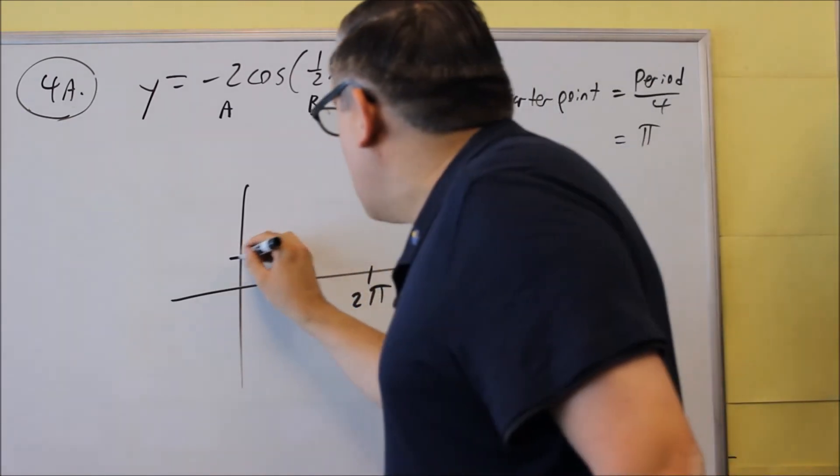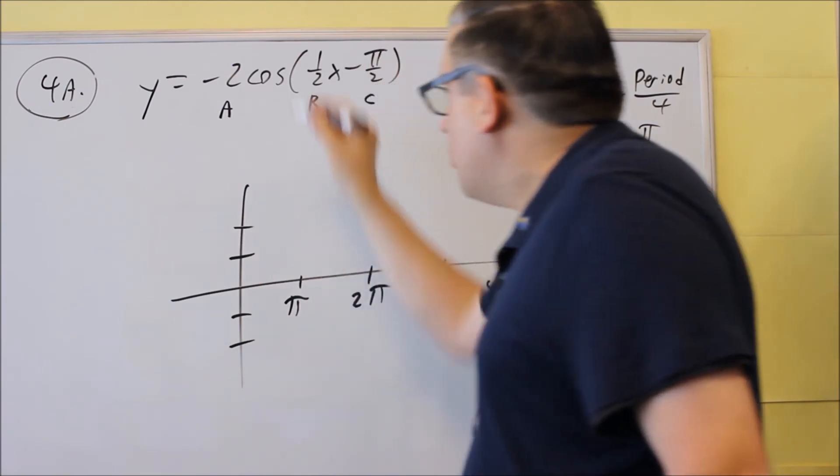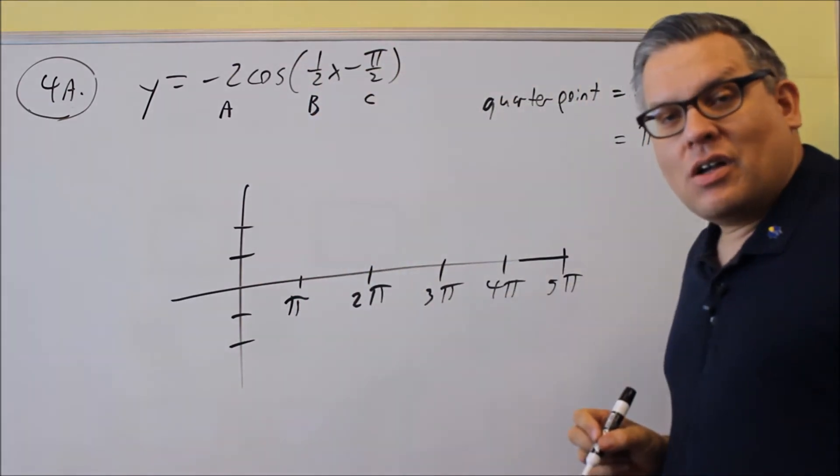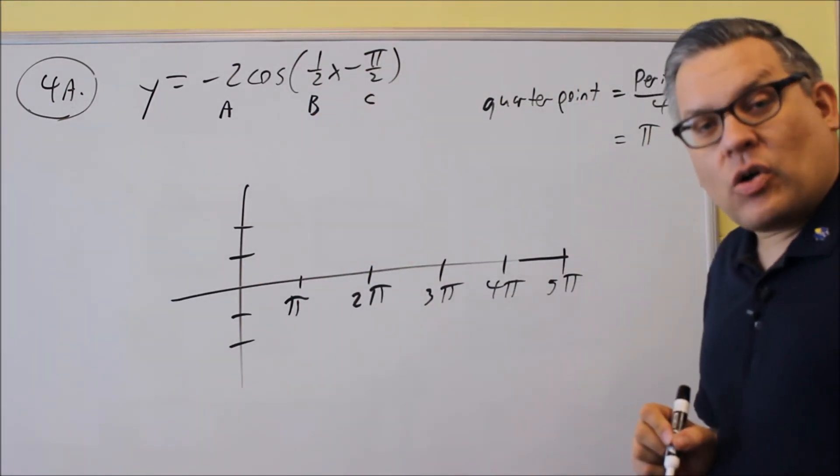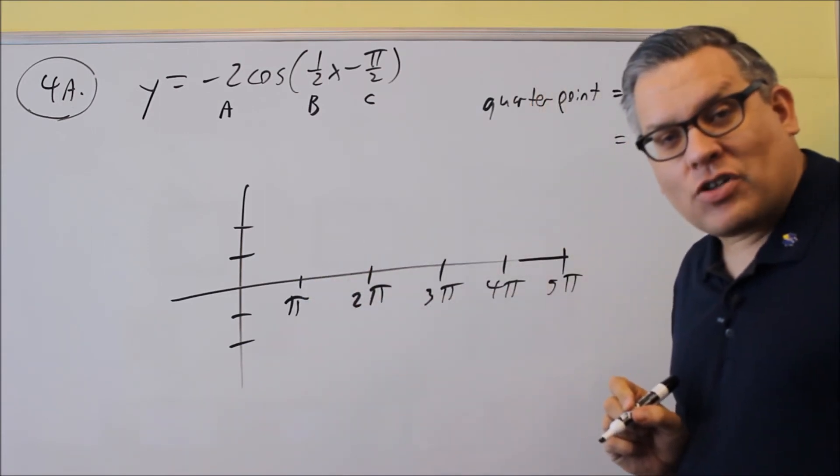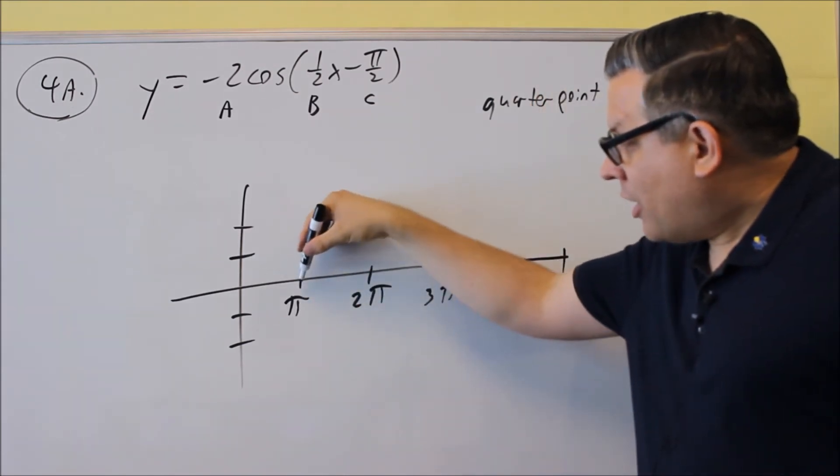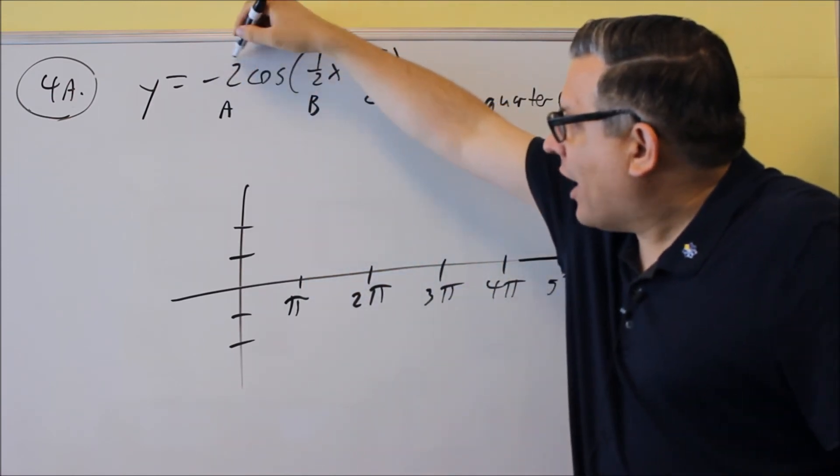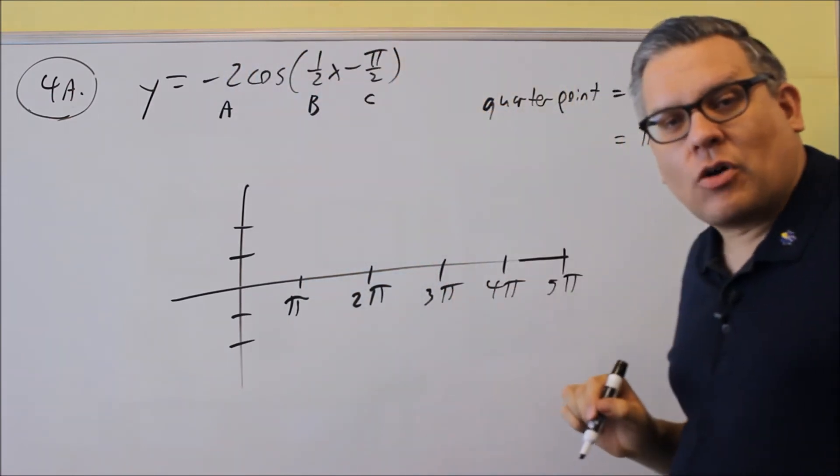Now, we also want to show the go up 2 and down 2 because 2 is the amplitude. If you have a cosine graph at your first starting point, at your phase shift, you're going to plot whatever number you have in front of the trig function, and it's a cosine.